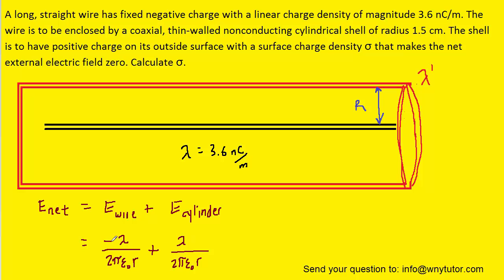Notice that we've included a negative sign in front of the electric field produced by the wire because the wire has a fixed negative charge as stated in the question.